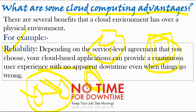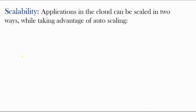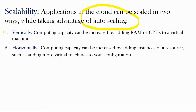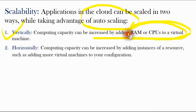The next advantage is scalability. Applications in the cloud can be scaled in two ways while taking advantage of auto scaling. We can expand our IT infrastructure very easily in cloud computing. Those two ways are vertically and horizontally. If we talk about the vertical way, computing capacity can be increased by adding RAM or CPU to a virtual machine.